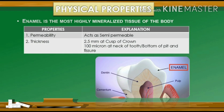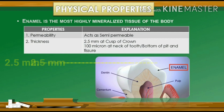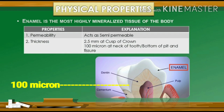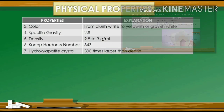An important physical property of enamel is its permeability. Enamel is permeable to some fluids, bacteria, and their products. The enamel attains a maximum thickness of 2.5 mm on the cusp of the crown and a minimum of about 100 microns at the neck of the tooth and at the bottom of the pits and fissures.